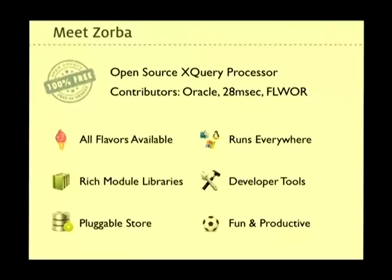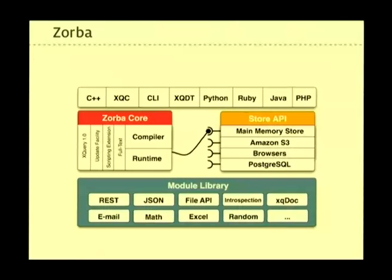A couple of words about the internals of the project. One thing we are trying to do is to be as up-to-date as possible with the W3C specification — implementing XQuery 1.0, XQuery 3.0, update facility, scripting extension, and full text. We are also providing a rich programming experience with many module libraries: OAuth authentication, PDF generation, image processing, emails, REST APIs, and more. Since you can manage your database from XQuery, we provide a pluggable store so you can use any kind of storage behind XQuery.